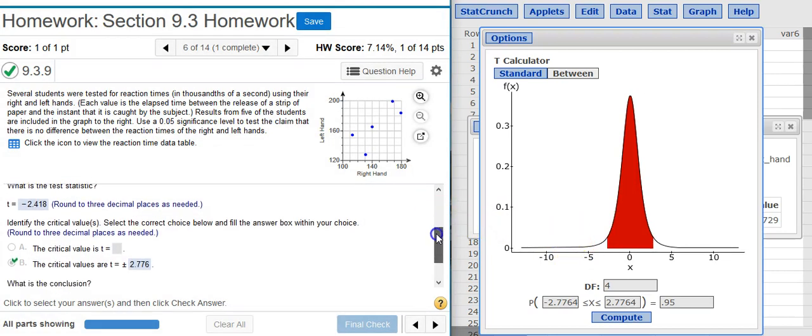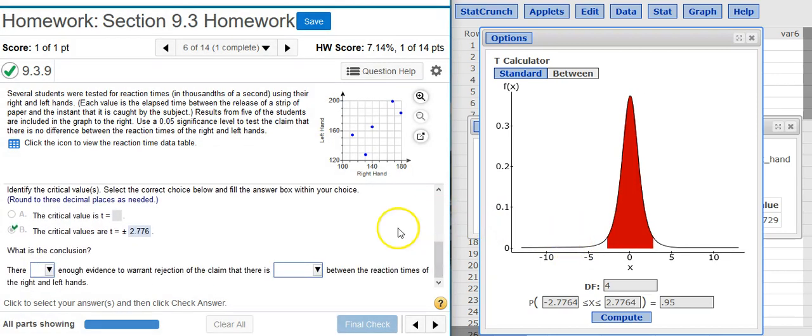I'm therefore not in the critical region. I'm not in the region of rejection, and therefore, there's not sufficient evidence. We're going to fail to reject the null hypothesis, and whenever you fail to reject the null hypothesis, there's not sufficient evidence. Of course, the claim here is that there is no difference between the reaction times. Excellent!